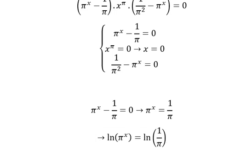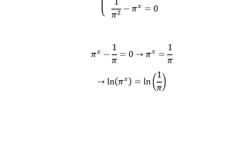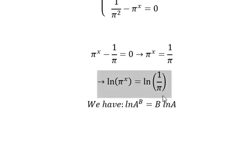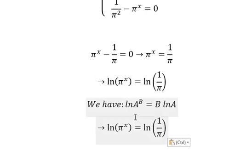Next we have the formula: natural logarithm of A to the power B equals B times natural logarithm of A. Now this one is capital A, this one is capital B. Now we need to transform this one into this one.